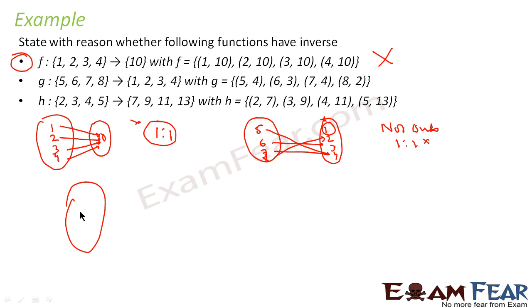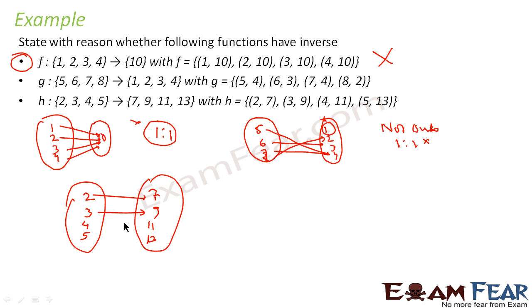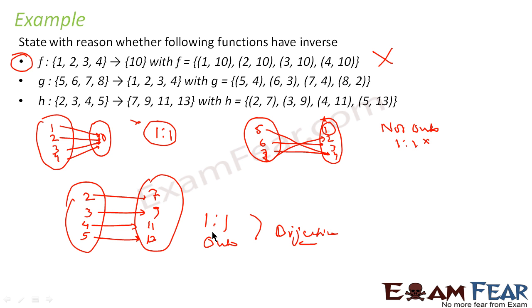Let us take the last one, h. h has values {2, 3, 4, 5} mapping to {7, 9, 11}. This function is one-to-one because all these values have only one pointer. Also it is onto — there is no orphan element. So this function is one-to-one and onto, meaning it is bijective. Since it is bijective, it is invertible. To summarize: to check invertibility, check if the function is one-to-one and onto. If yes, it is invertible.